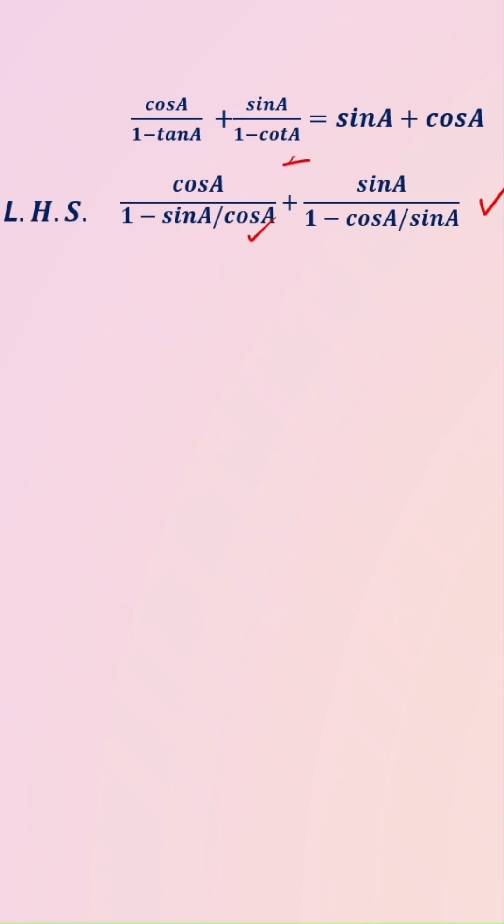Cot A, you know, is equal to cos A divided by sin A. So we write here in place of cot A, cos A divided by sin A.